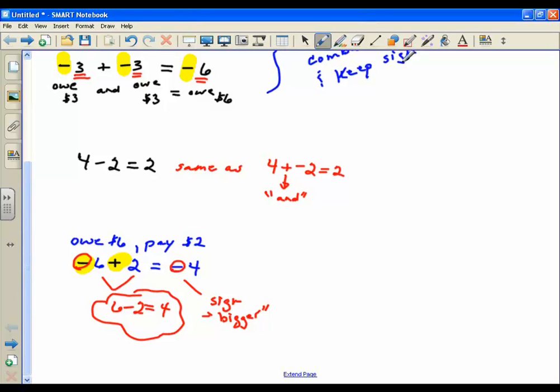Same thing up here with this first one. You had a positive 4. We didn't write it because it's implied. And we had a negative 2. So basically, you subtracted them. You said, 4 minus 2, that equals 2.